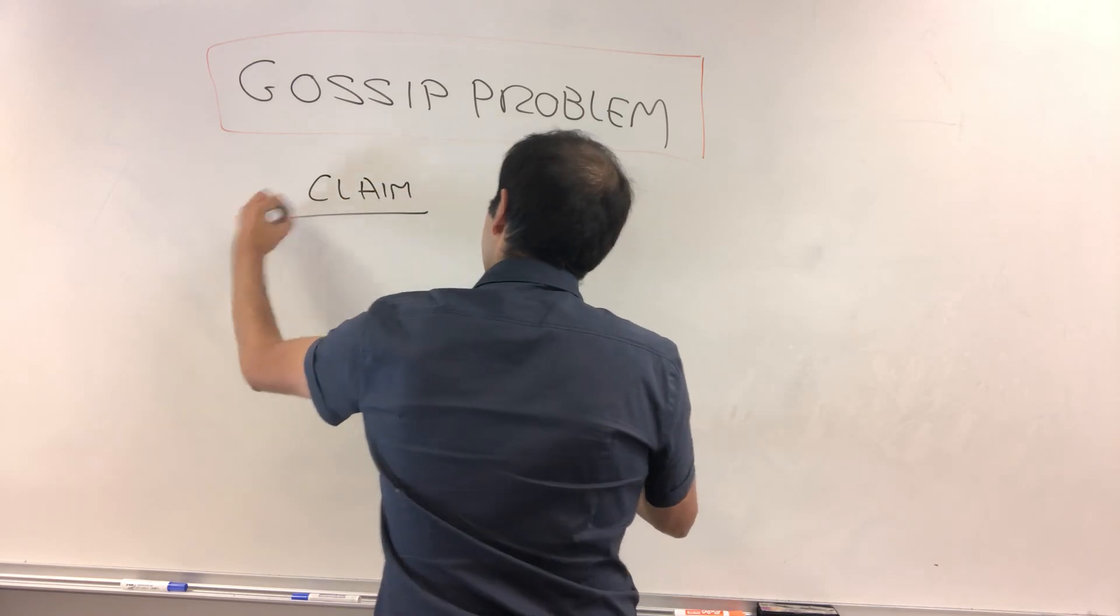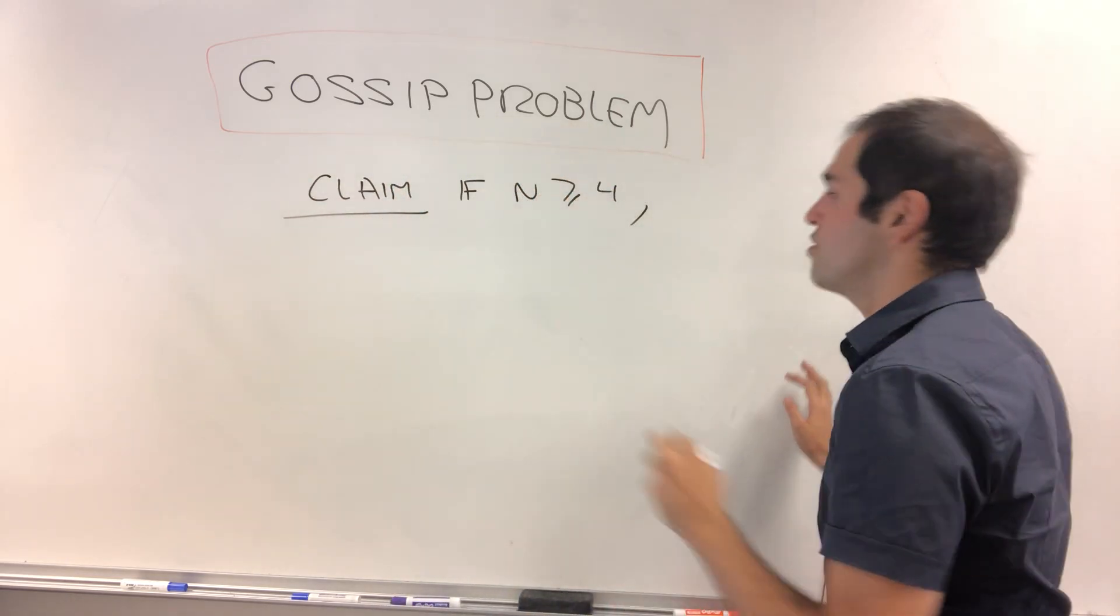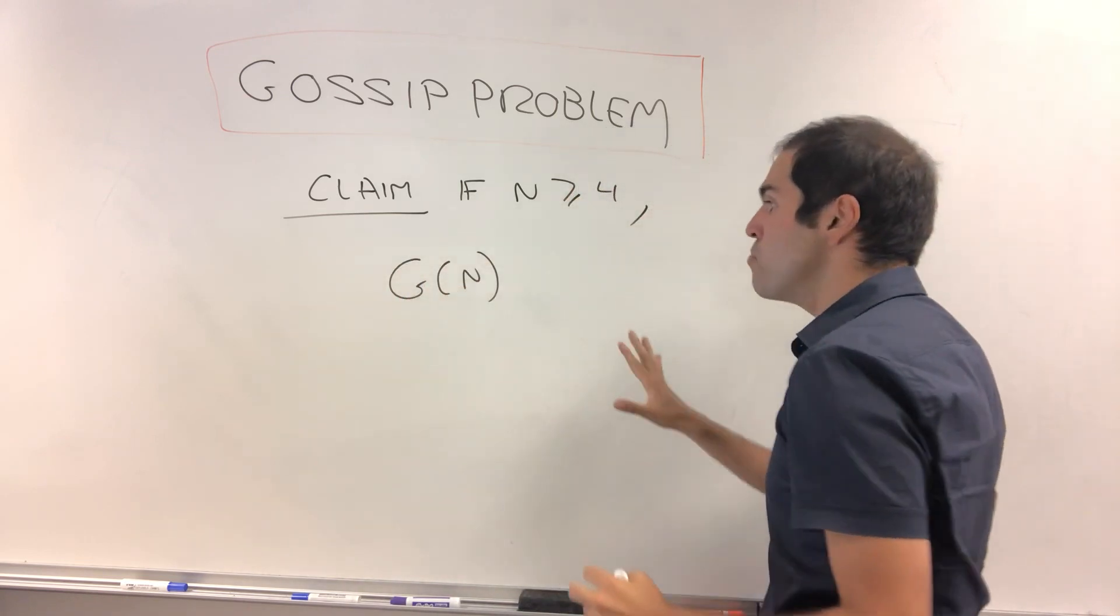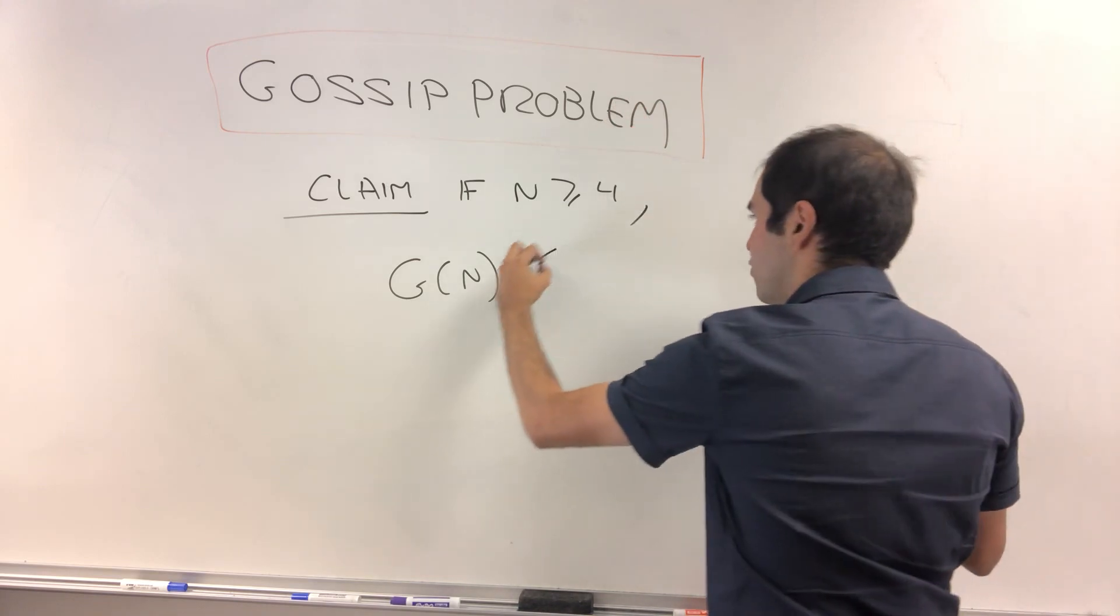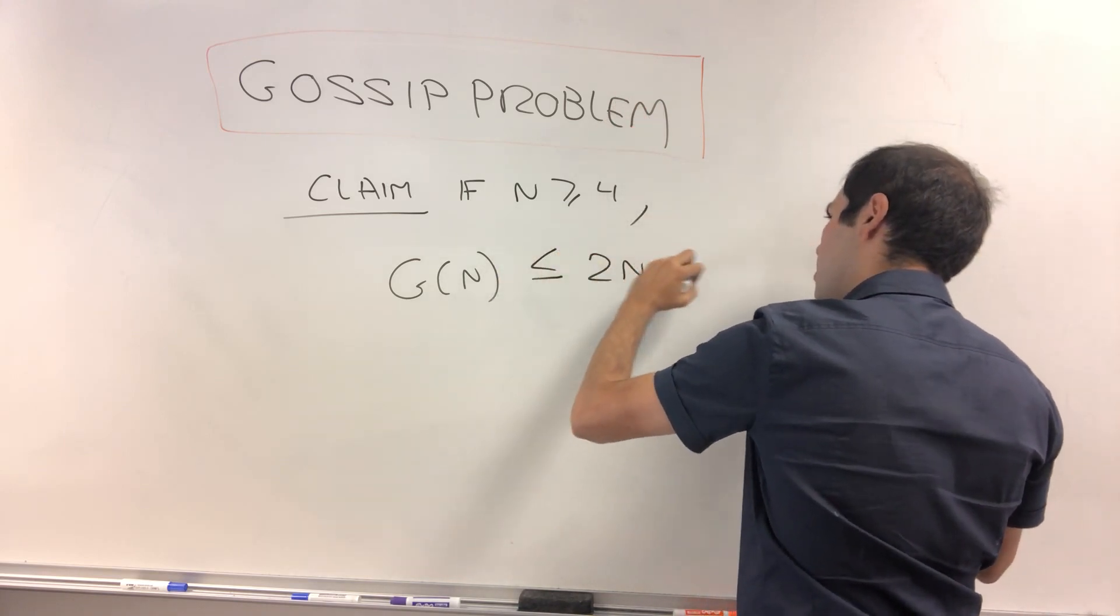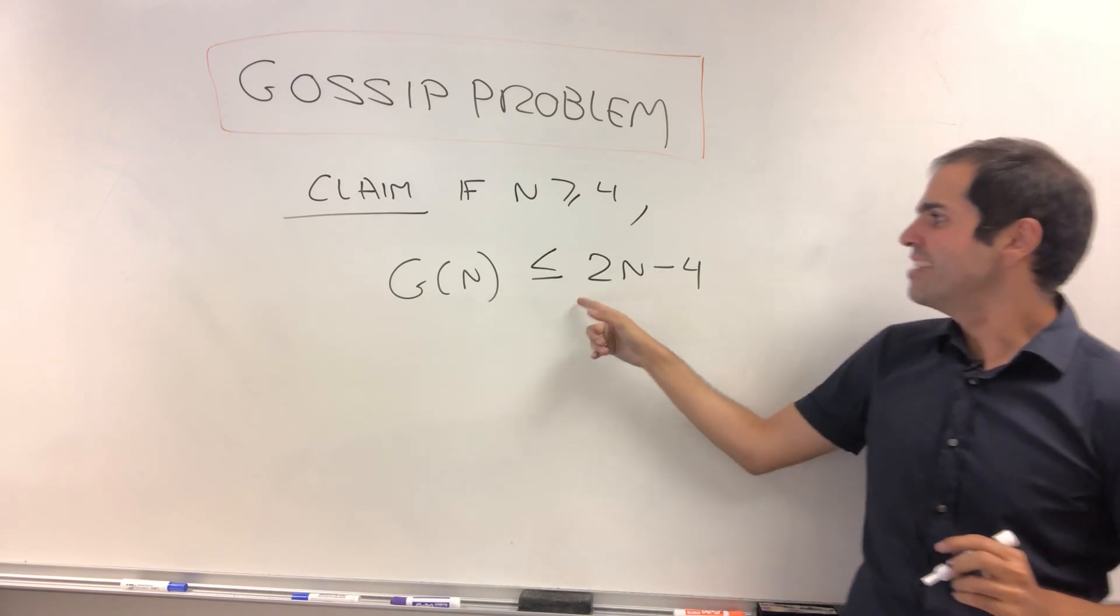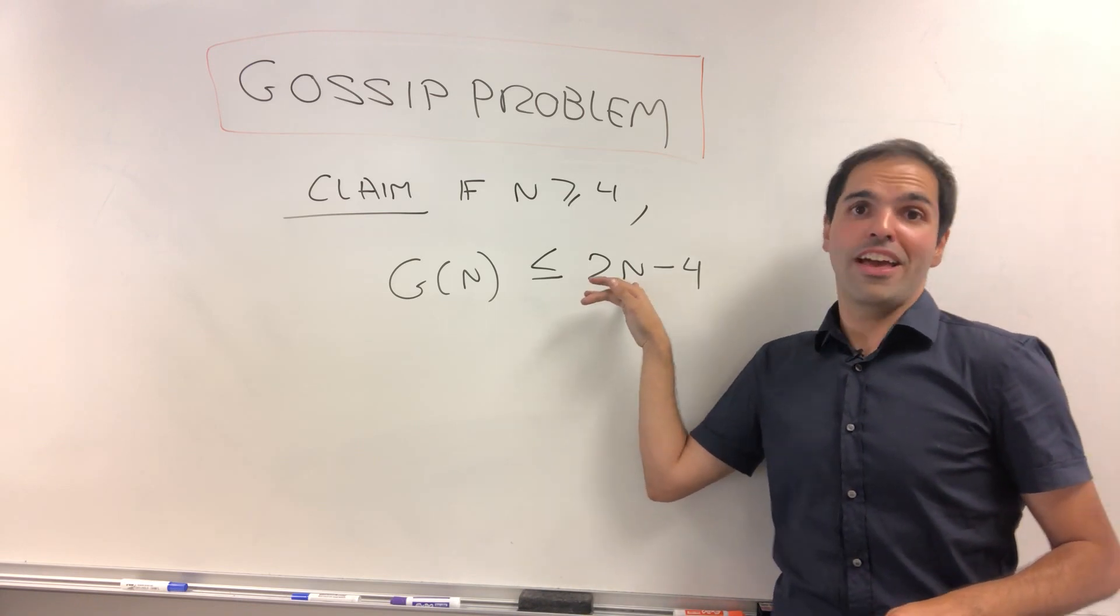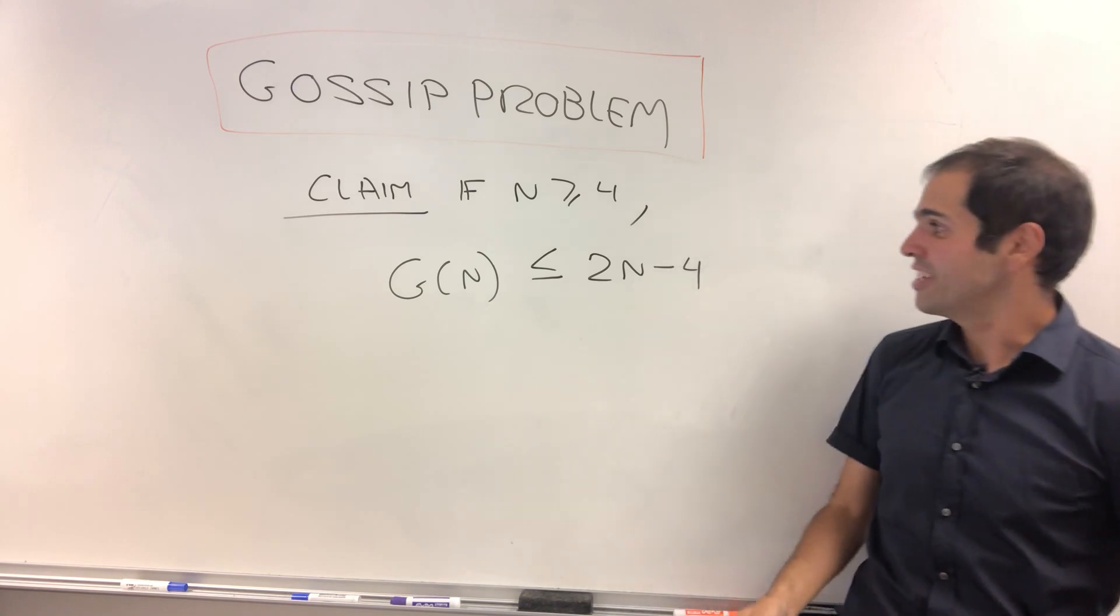And I want to show the following. So claim: If n is greater or equal to four, for at least four people, then the minimum number of calls is no greater than two n minus four. So if n is greater or equal to four, then g of n is less than or equal to two n minus four. And convince yourself that for n equals three, it's false because we've just shown that g of three equals three.